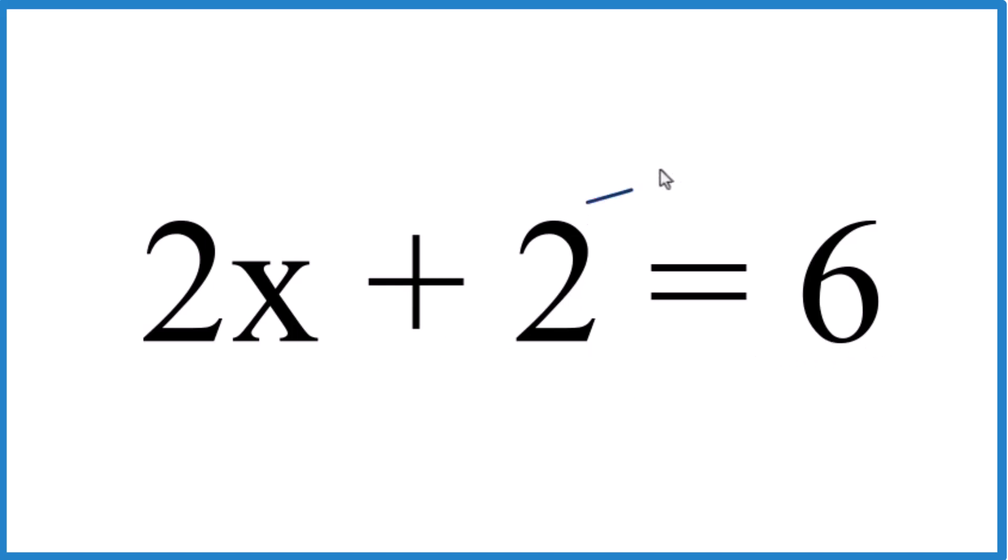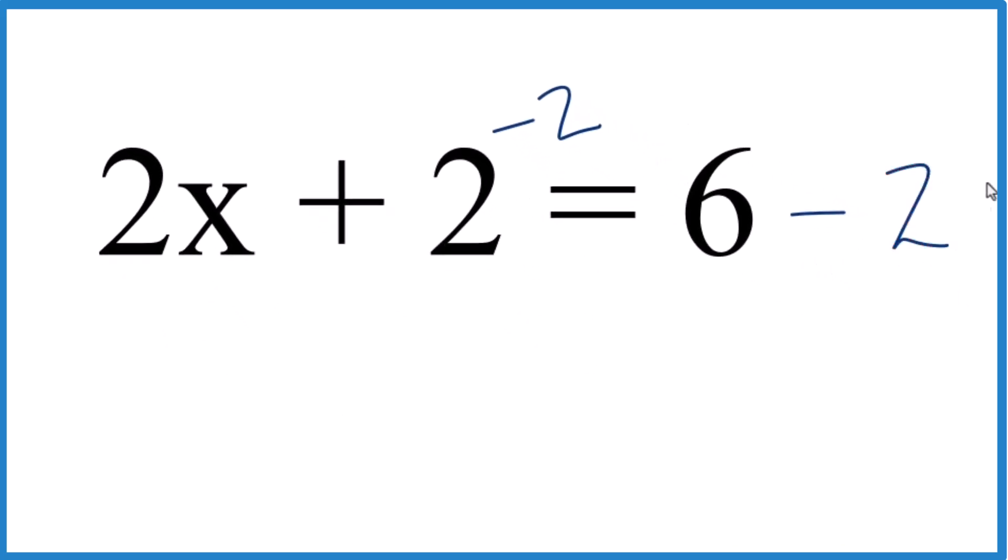First off, let's get rid of the 2 here. So we'll subtract 2 from this side and from this side. So now 2 minus 2 is 0. So we're left with 2x equals 6 minus 2. That's 4.